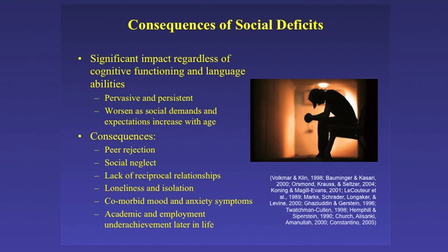This came out of a study conducted in 2000 by Dr. Kazuri, who looked at the quality of these relationships. We often assumed that individuals with ASD enjoyed being by themselves and were seeking solitude. But it turns out they were actually able to report and describe feeling significant loneliness in light of all their social challenges. We also see that these children and teens are at higher risk for developing comorbid mood and anxiety symptoms — anxiety disorders and depressed mood because of social challenges — and they experience academic problems during childhood and adolescence that continue into difficulties with employment later on.